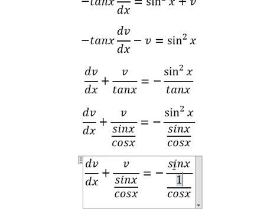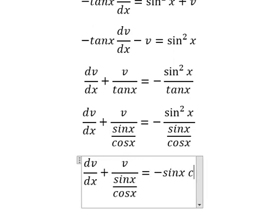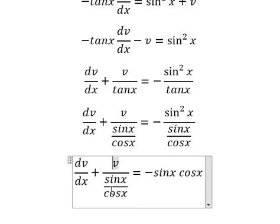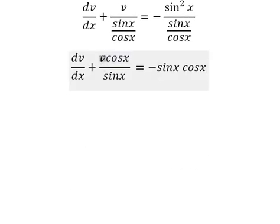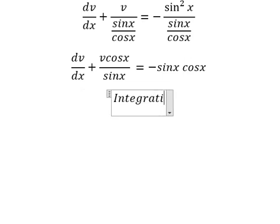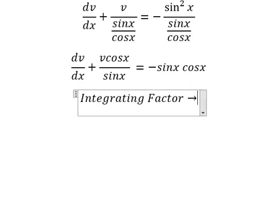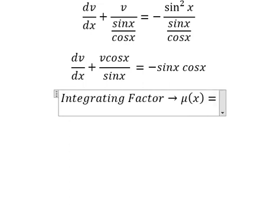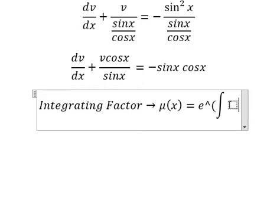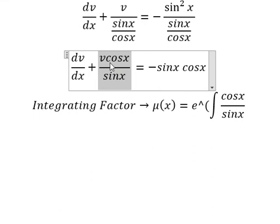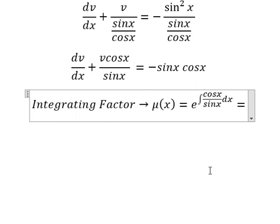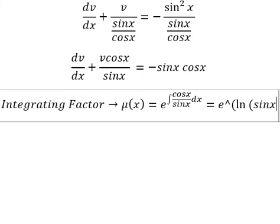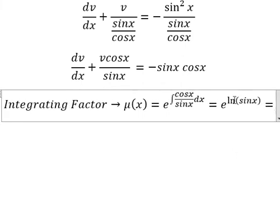We simplify sin(x) on numerator and denominator, and cos(x) will go to the numerator. Now we have v and the first derivative of v. We can use the integrating factor method. We need to find μ(x) equals e to the power of the integral of cos(x) over sin(x) dx, which equals e to the power of ln(sin x), and if we simplify this we get sin(x).